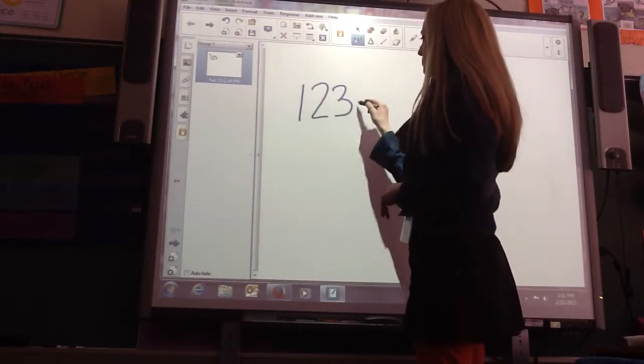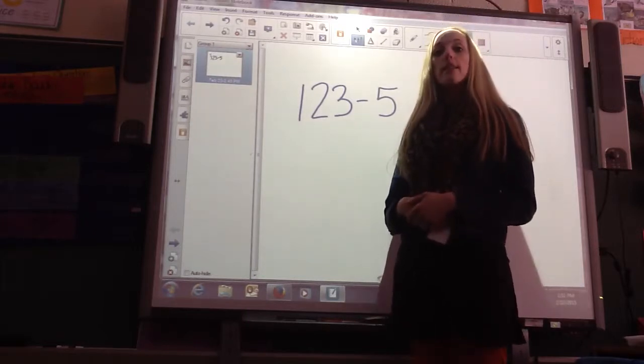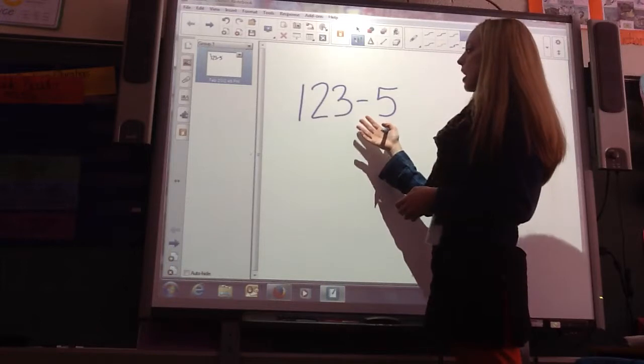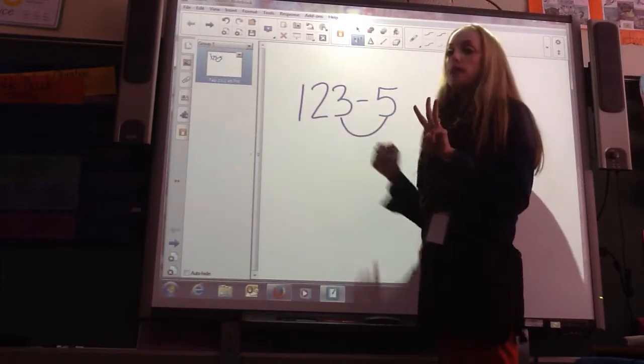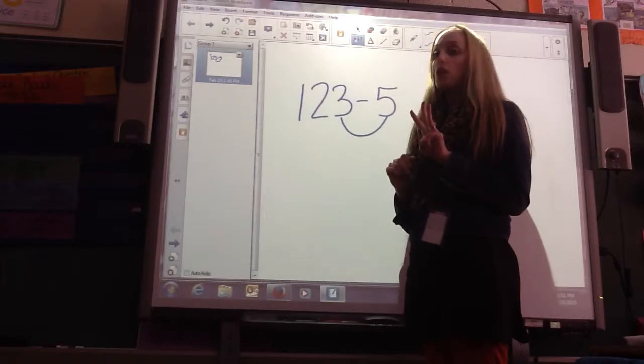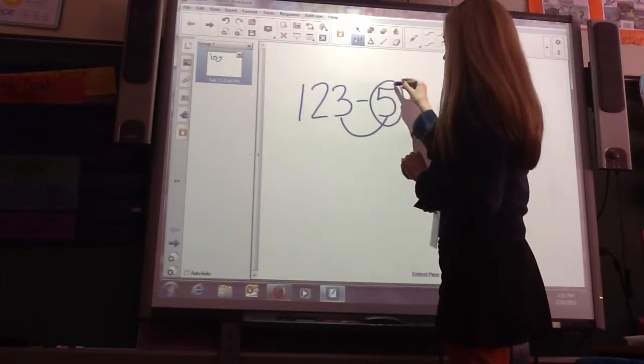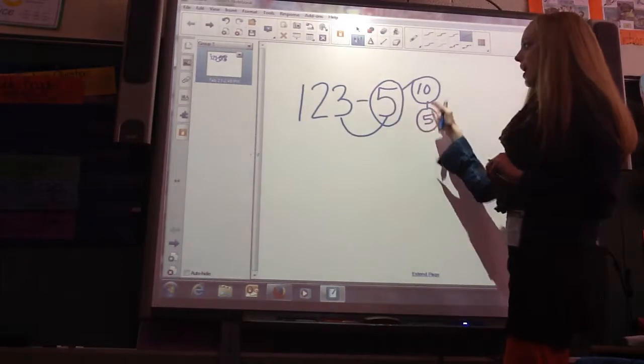I had 123 minus 5. Again, just like the other ones, I'd ask, what are we subtracting? Hundreds, tens, or ones? In this case, we're subtracting the ones. If I had 3 ones, could I subtract 5 ones without regrouping? No. So in this case, I'm going to turn this into a 10. Remember those number bonds. So 5 and 5 make 10.